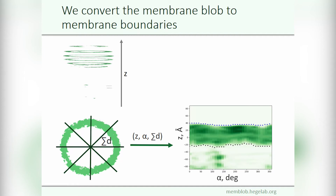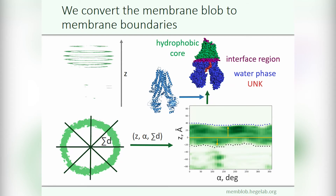We search for the first minimum density values from our origin in both positive and negative z-directions. We identified the membrane blob's boundaries as these first minimum values. We project them onto the all-atom structure to pair atoms with their localizations. Surface atoms beyond the determined boundaries are in the water phase. There is an interface region which is usually 8 to 10 angstroms thick, and atoms closer to the center than this are in the hydrophobic core.